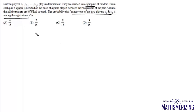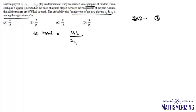First we will find the total number of possible combinations. The total number of possible combinations is given by the total number of pairs that can be made from these 16 players. We have 16 players and we have to make pairs of 2, eight times. So that will be 16! divided by (2!)^8 into 8!.